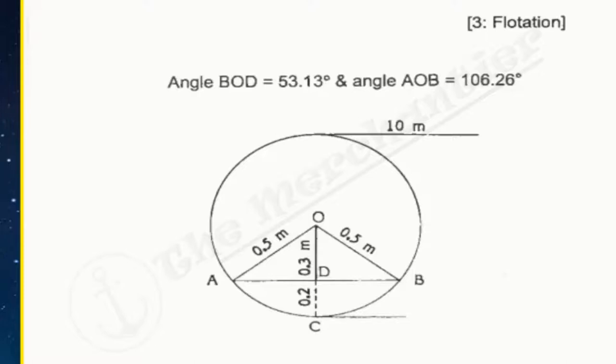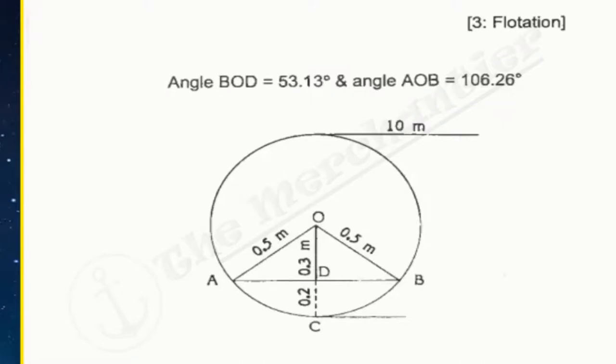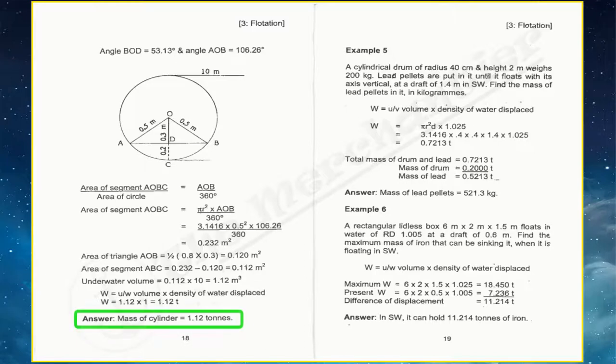And corresponding area nikalna hai. With the help of Pythagoras theorem you can easily find the base. The height is given here. And along with that you can find BOD, which is BOD, you can find BOD with the help of angle. And scientific calculator, you can find the angle easily. Whatever BOD angle comes, if you double it, it will be AOB. And the AOB angle is 106.26 degrees which will need to be removed from the sector area, that is AOBC. As you all know the particular formula, that is area of sector minus area of triangle. So with the help of that you can easily find the displacement. So now this calculation becomes very easy. And whatever displacement will be, that will be the mass of cylinder, that is 1.12 tons.